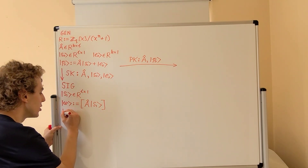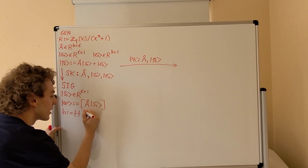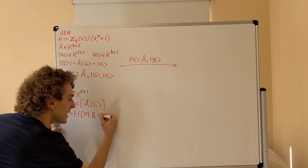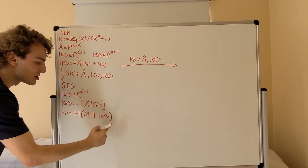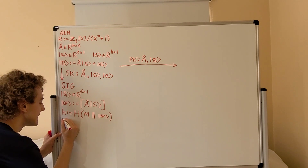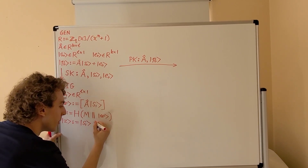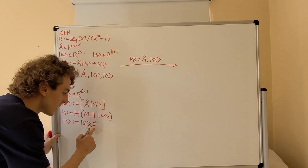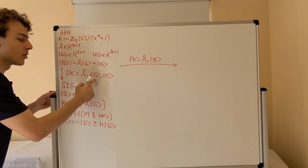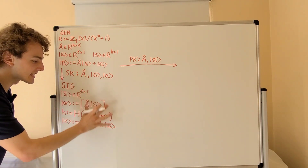Now let's define the value H. We get H by hashing — we hash the message M concatenated with the vector W. This hashing procedure gives us the value H. Now we construct another value, Z. Z is defined as S1 plus or minus H times S0, where S0 comes from the secret key. So A and S0 both come from the secret key, which is very essential in this signing procedure.